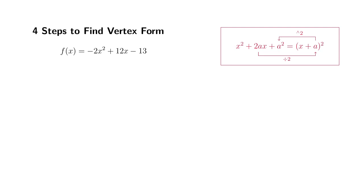All right, let's look at the four steps to find the vertex form. Here's an example. We have this quadratic function, f of x is equal to negative 2x squared plus 12x minus 13. Let's find its vertex form.